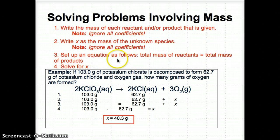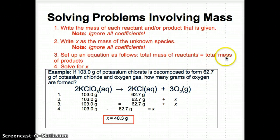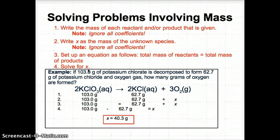Step three: set up an equation where the total mass of the reactants — masses added up on the left side of the arrow — equals the total mass of the products on the right side of the arrow. Step four: solve for X. This is mostly just algebra — addition and subtraction.